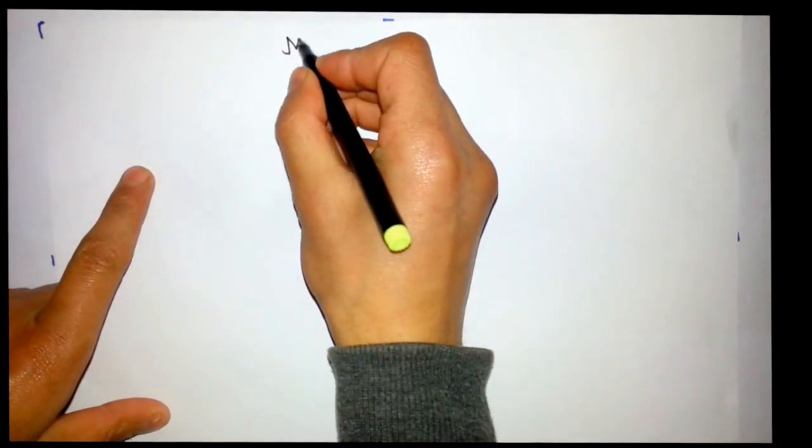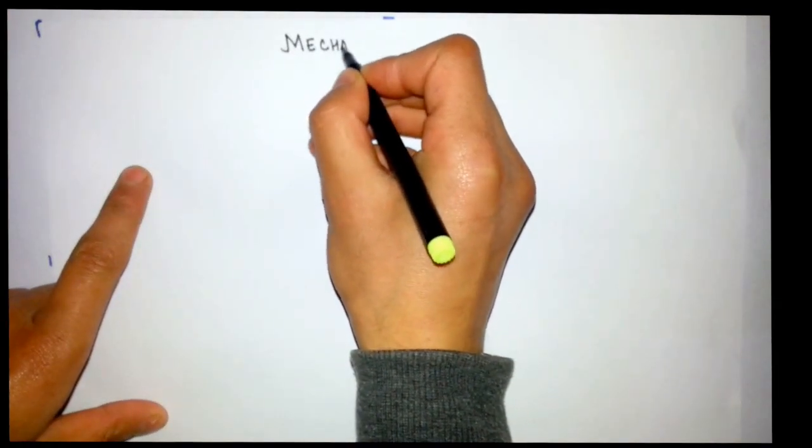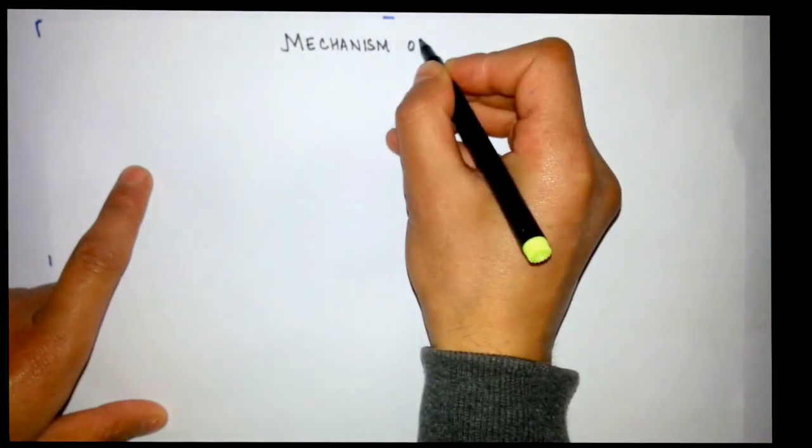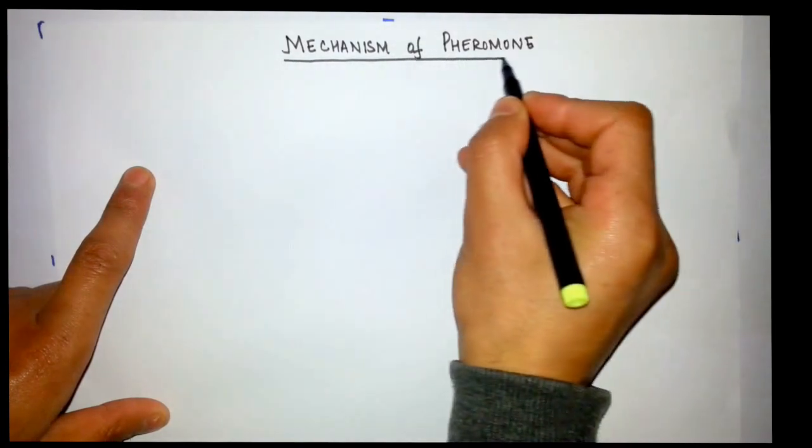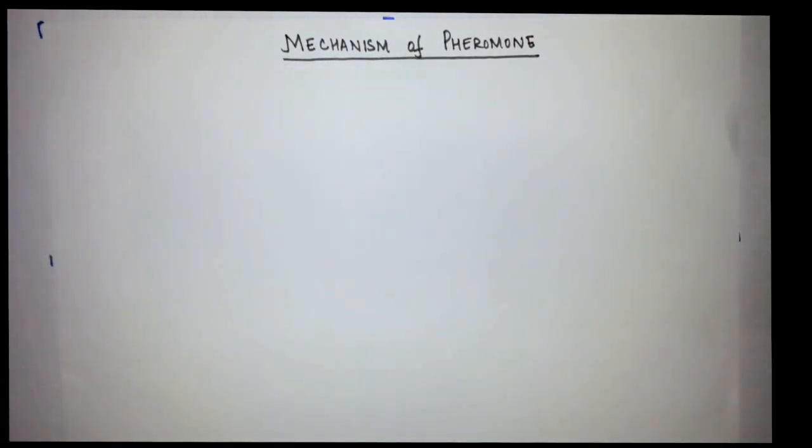Today we will be discussing the mechanism of pheromones - how pheromones or any odor is received by animals and how they're able to transduce the signal into neurons. This will be our main topic today.